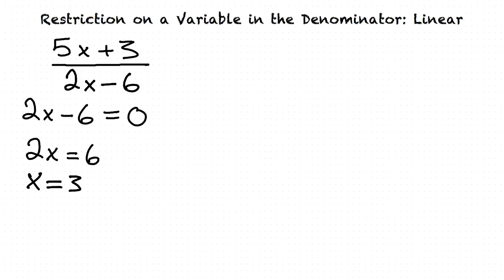How do we know that this is the right answer? We can substitute x for 3 in the expression, and when we do that in the denominator, we will get 6 minus 6, which is 0, a number we cannot divide by. This shows that it is a restricted value.